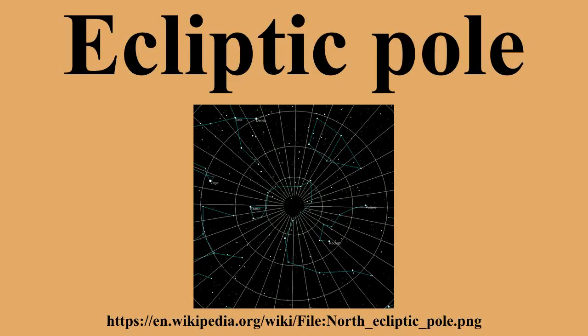There are two ecliptic poles. Due to precession, the celestial pole moves in a circle around the ecliptic poles once every 25,800 years. The ecliptic poles are at: